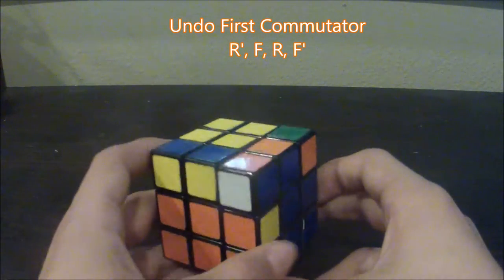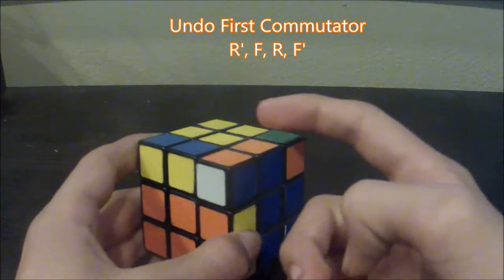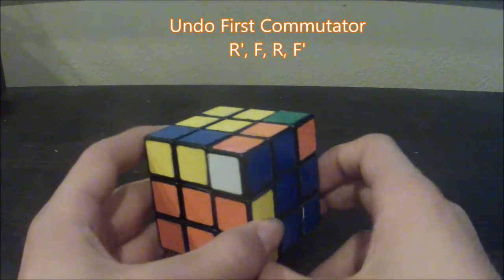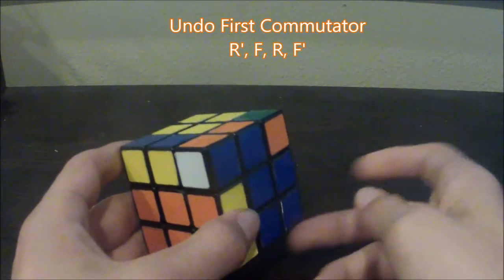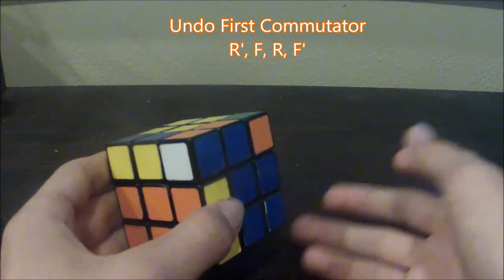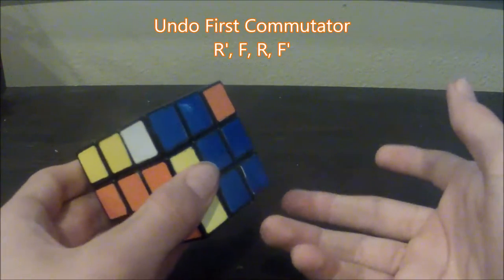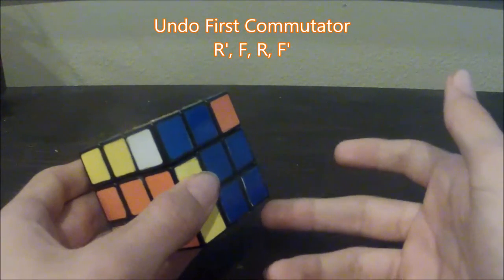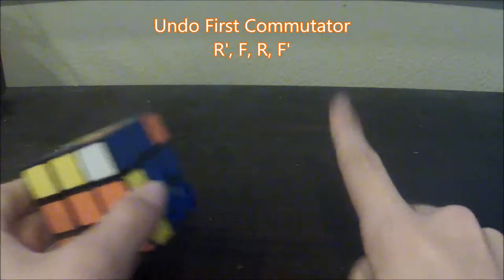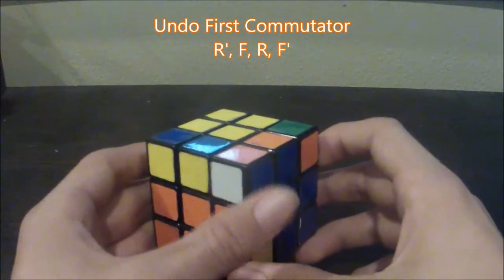Undoing that would mean reversing each of these turns. Holding the cube from the same position, an easy way to see a commutator backwards is to write it down and make every clockwise turn counterclockwise and vice versa. Then you'll have it backwards. So, now I've done that for you, and let's follow it.